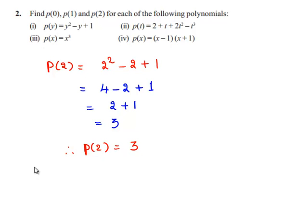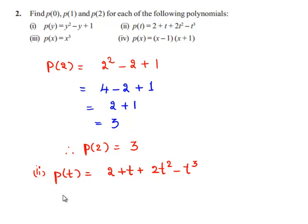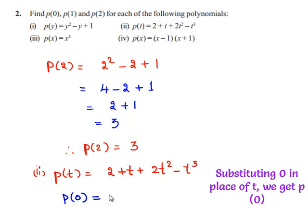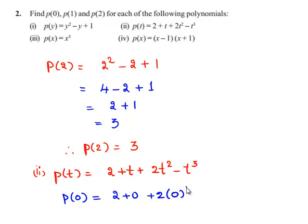Moving on to the second polynomial, p of t is equal to 2 plus t plus 2t square minus t cube. Let us first find p of 0. This is equal to 2 plus 0 plus 2 times 0 square minus 0 cube, which is equal to 2 plus 0 plus 0 minus 0, which is equal to 2.